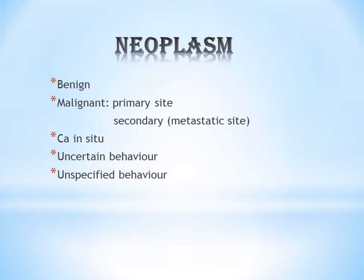In this chapter, most codes are picked from the Table of Neoplasm in the alphabetic index. You have to be very clear on how to pick a code from the Table of Neoplasm. In that table you can see many headings: malignant primary, malignant secondary, benign, carcinoma in situ, uncertain behavior, and unspecified behavior.